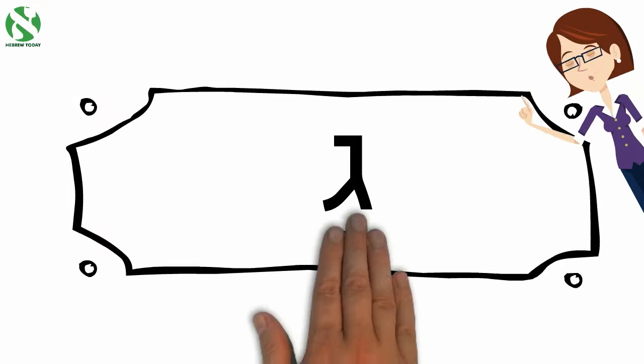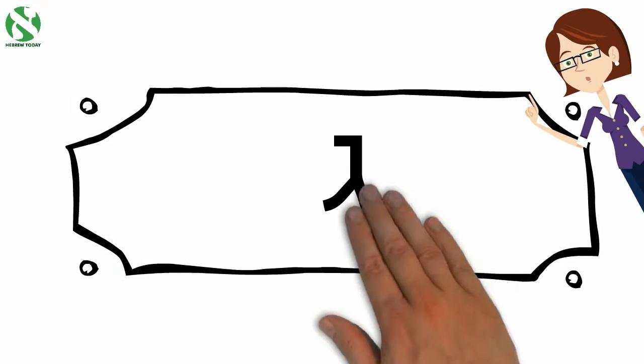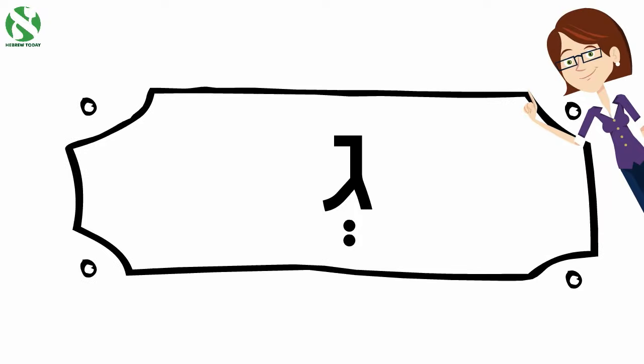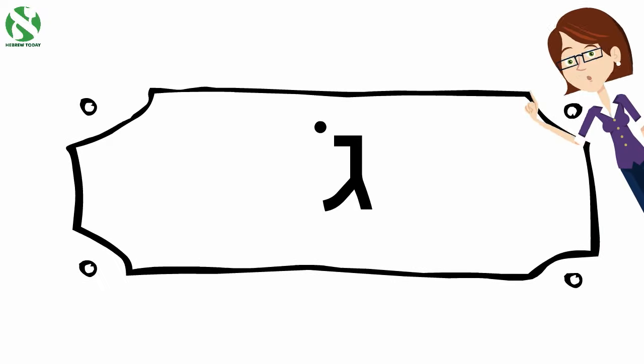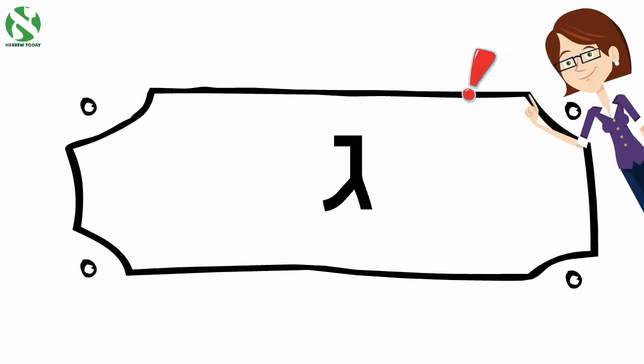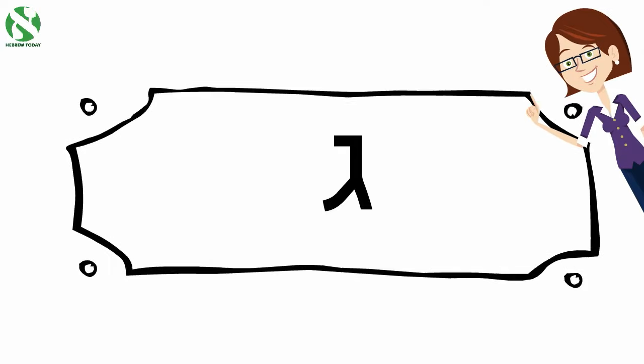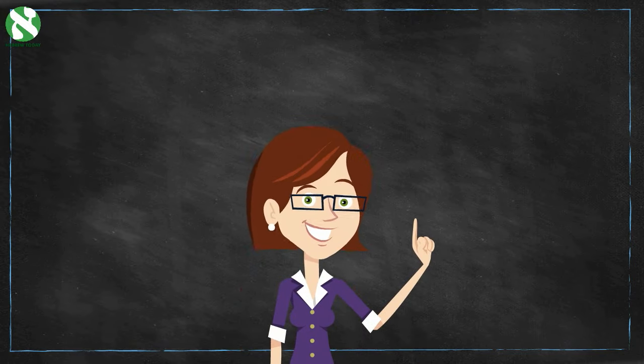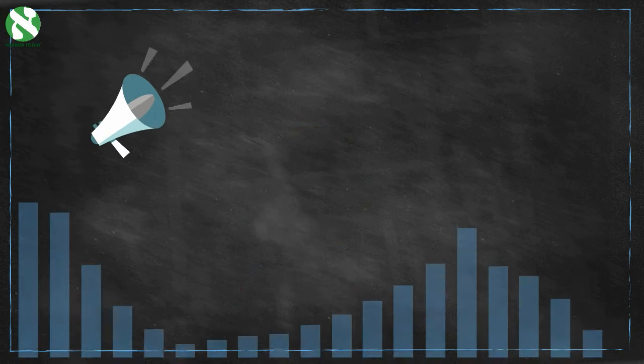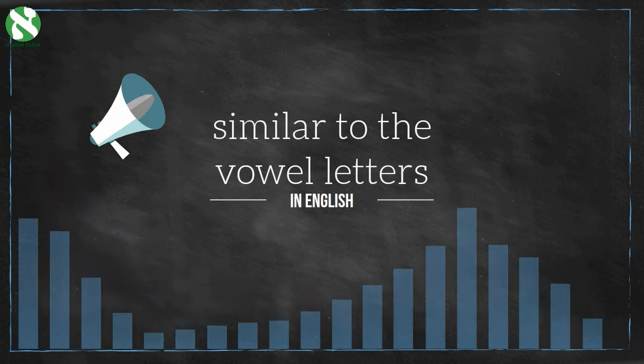To put it simply, Nikud is a bunch of lines and dots that decorate the letters in Hebrew, but these decorations have a very important job. They help us know how to read and pronounce words. Each Nikud symbol represents a different sound. They're similar in function to the vowel letters in English.